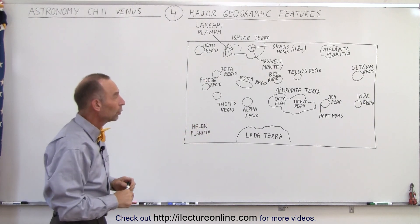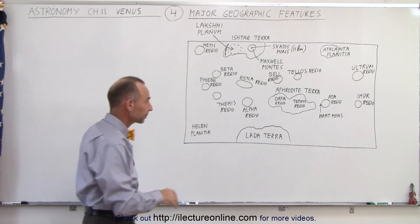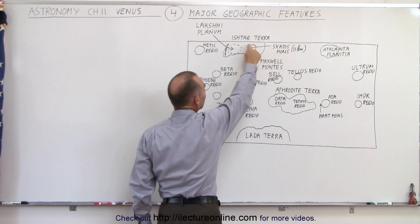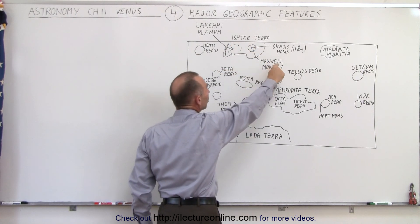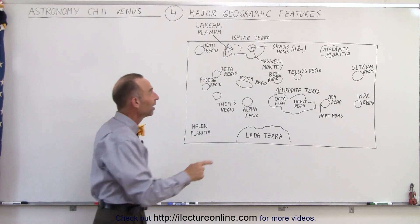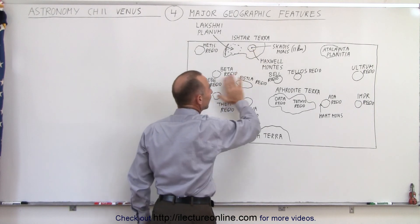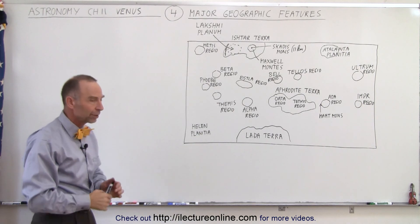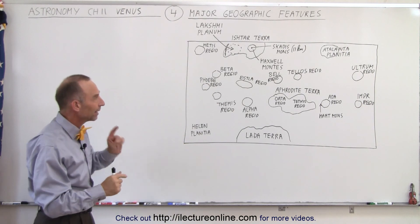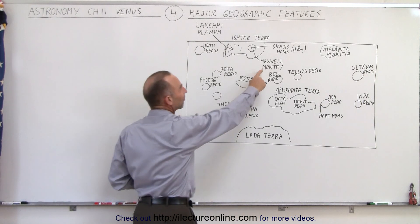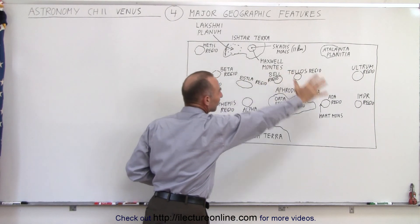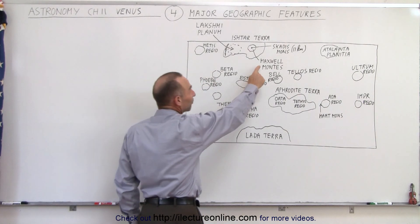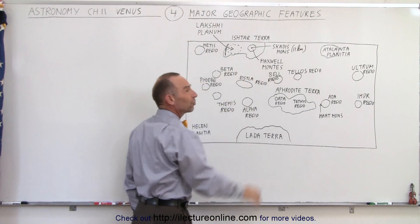The highest mountains on the surface of the planet are right here in a mountain region called Maxwell Mons. What's interesting is that this feature is the only region of the entire planet — the only mountain, the only valley, the only crevasse, anything we can think about — it's the only surface feature named after a man. Everything else on the planet is named after a woman, which is kind of interesting. And everybody probably recognizes the name Maxwell.